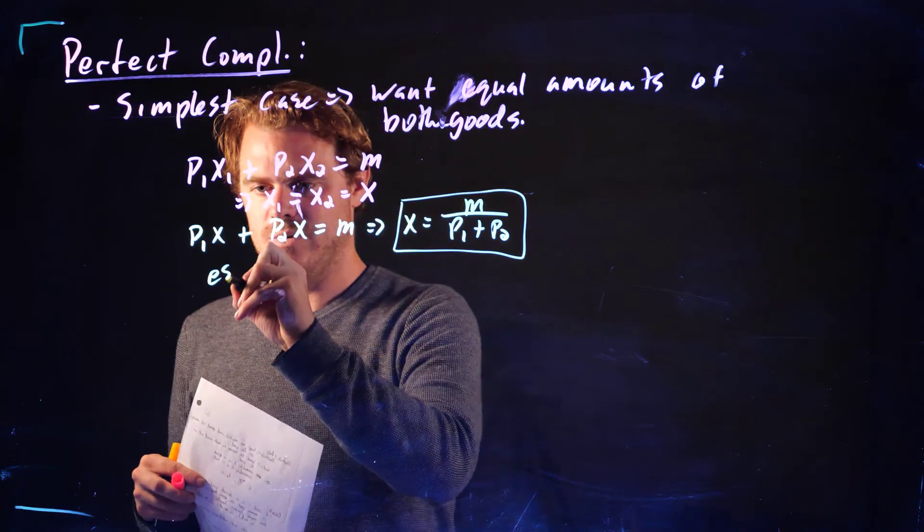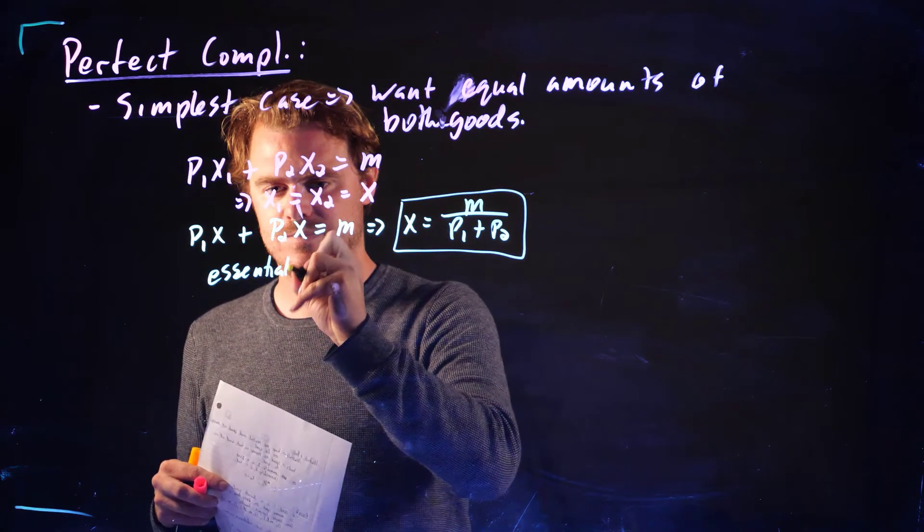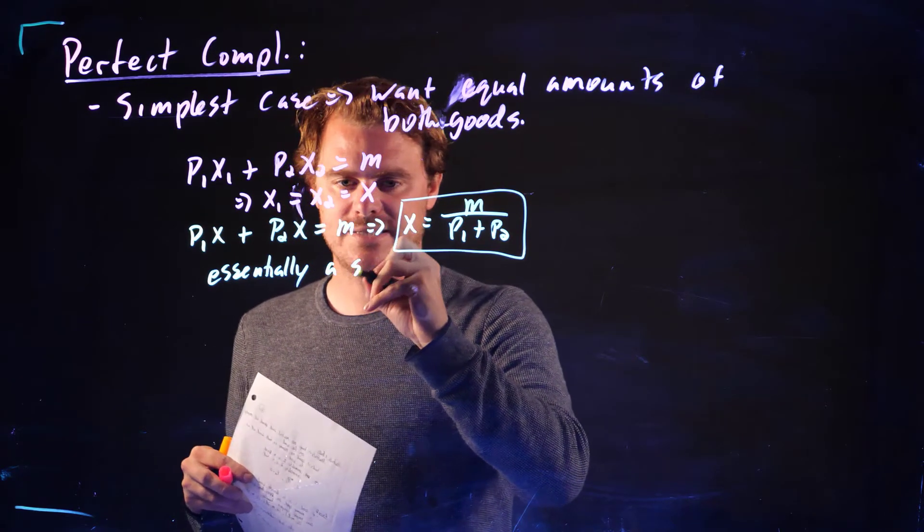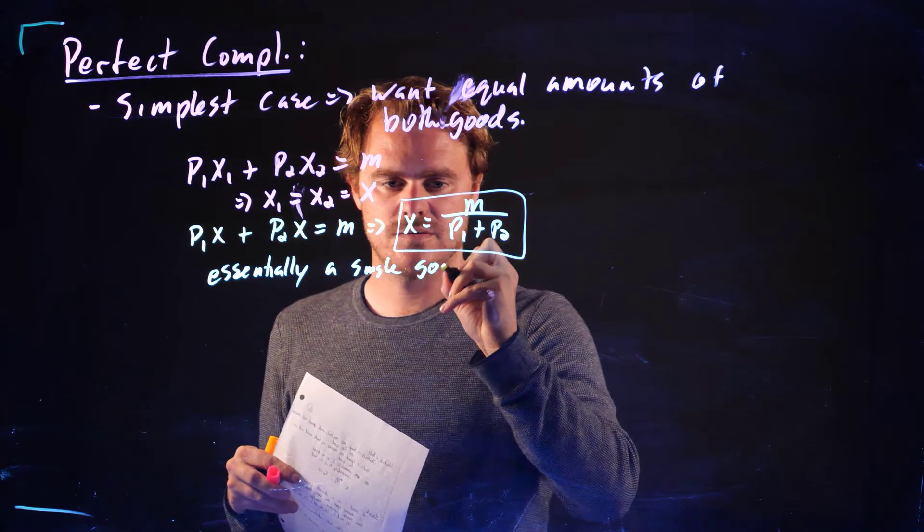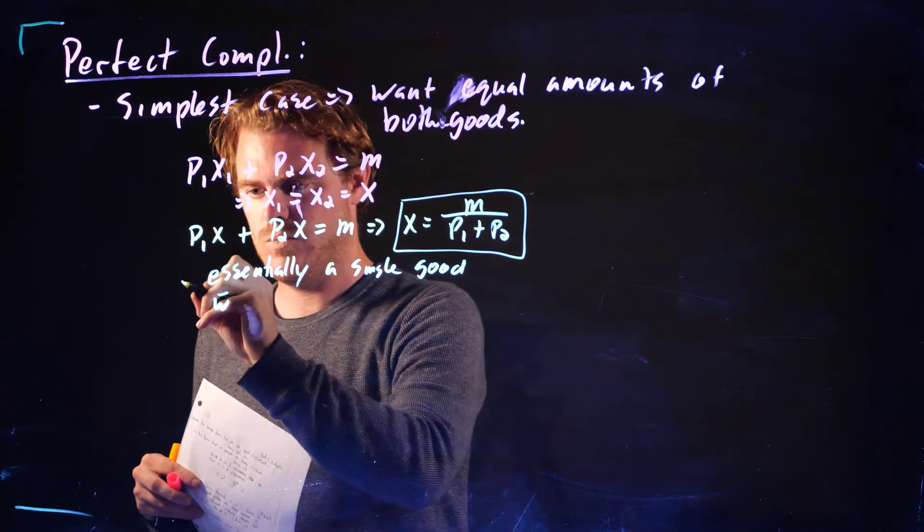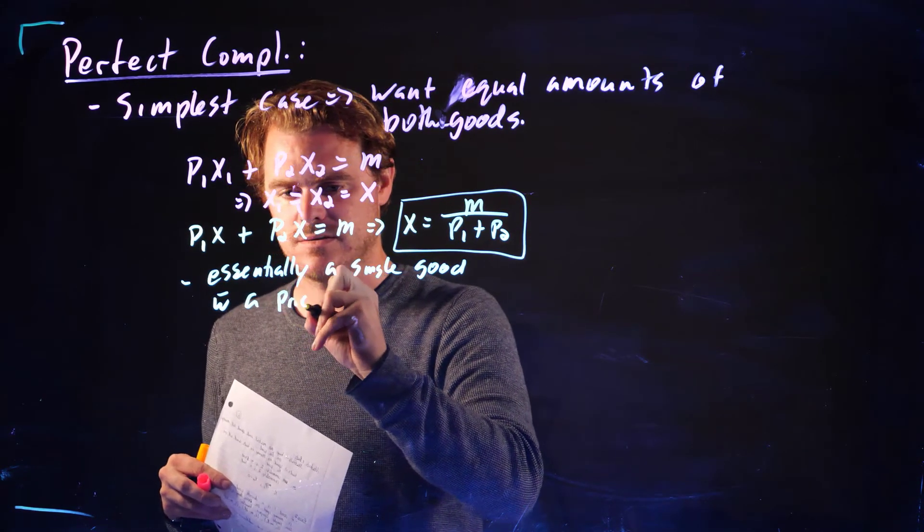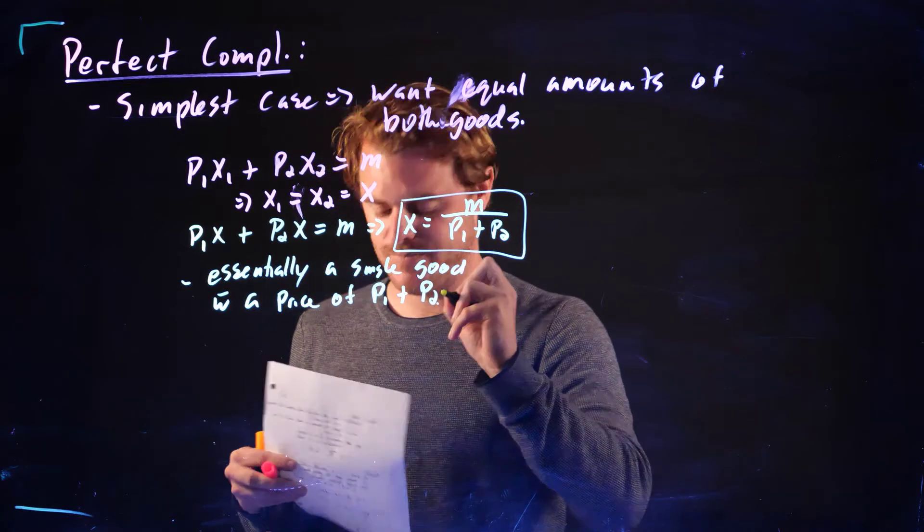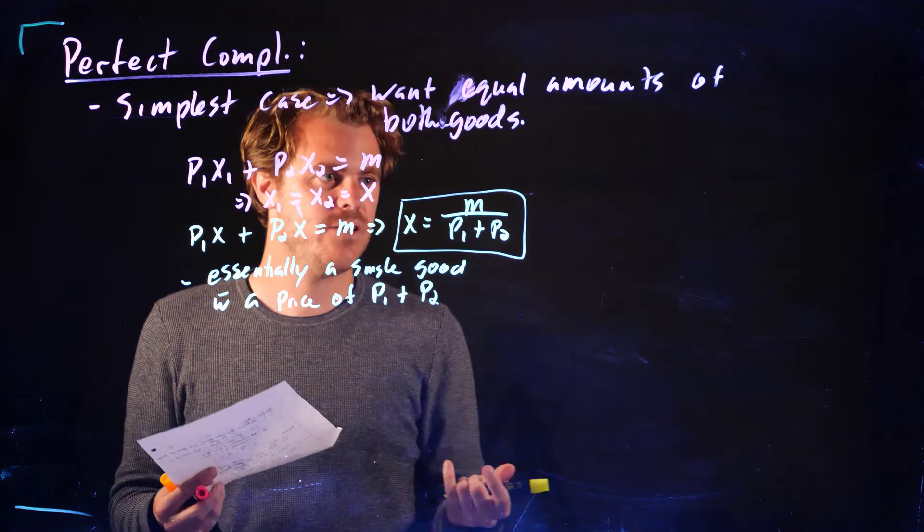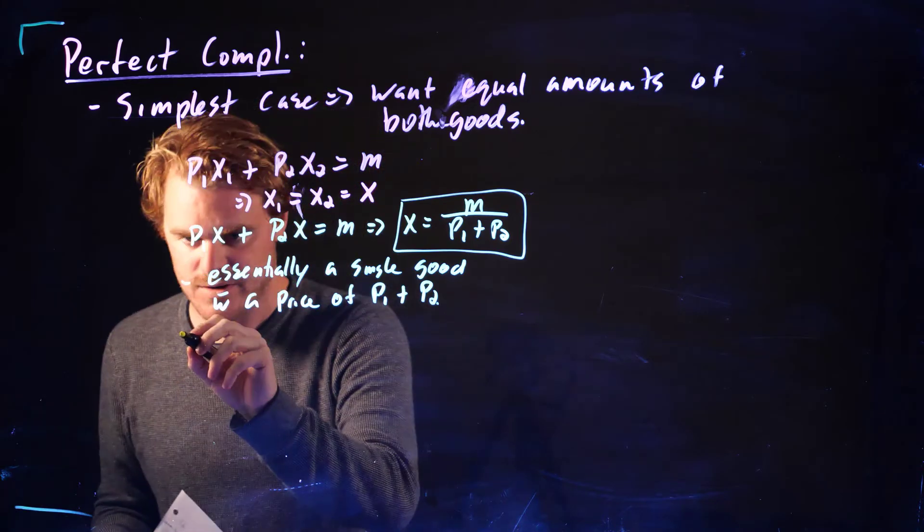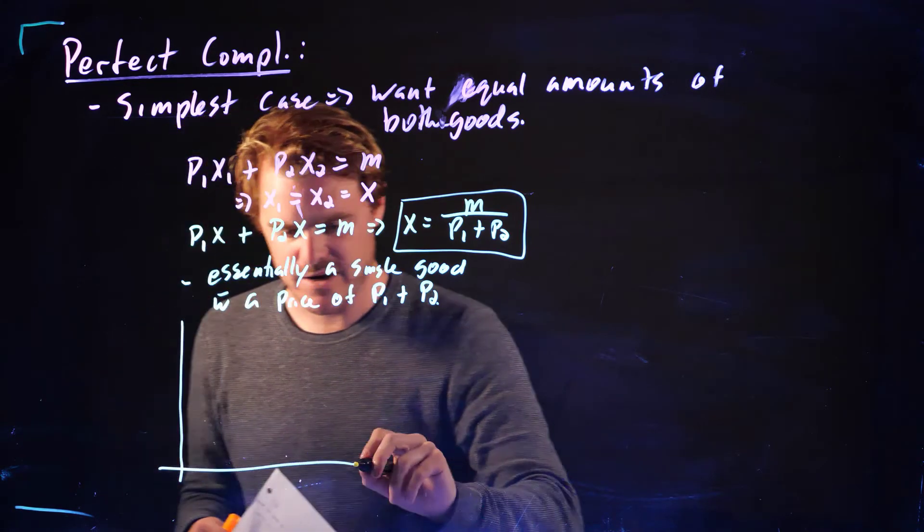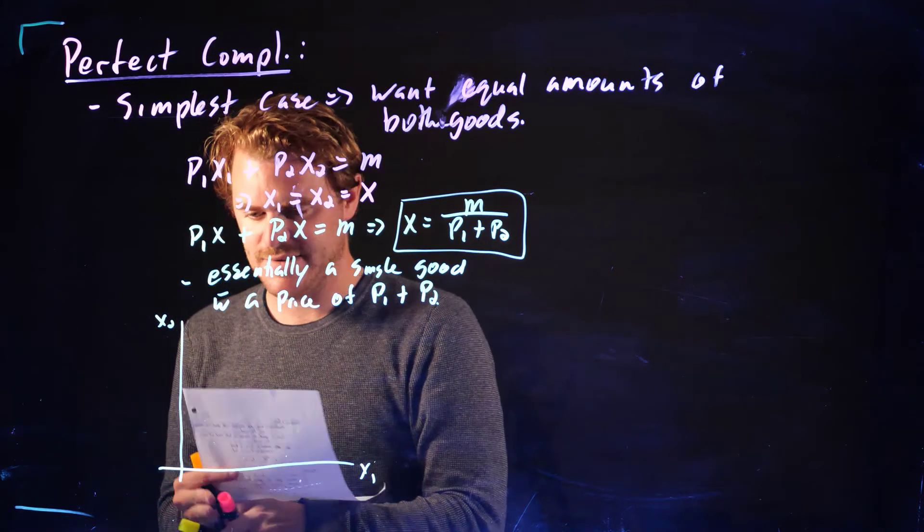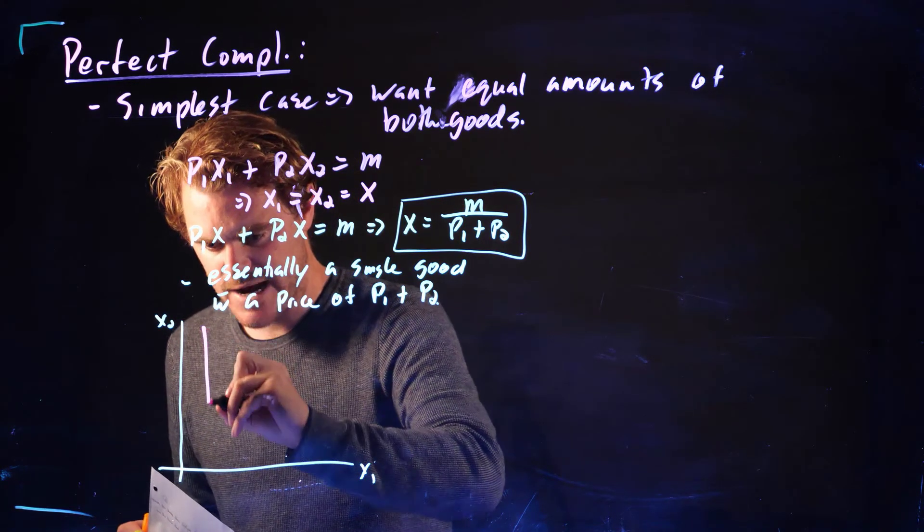So essentially, what we're thinking of here is essentially a single good with a price of P1 plus P2. And how to think about this case, we have these indifference curves that are these right angles.